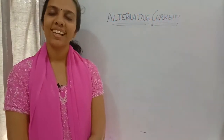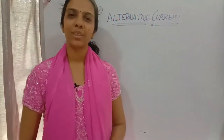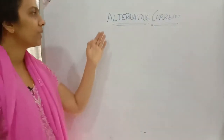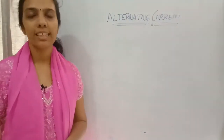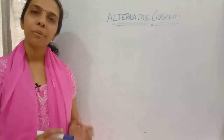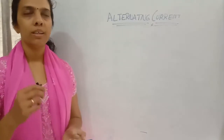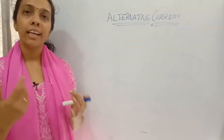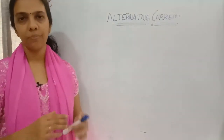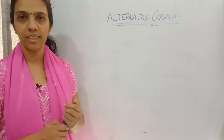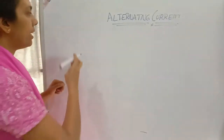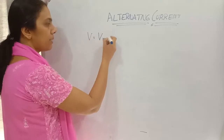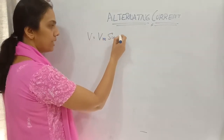Hello, my dear students, welcome back to Learn Physics. In today's topic we are going to continue with our alternating current chapter. In the previous classes we learned about AC circuits including resistance, inductor, and capacitor separately. We learned that if we are using a voltage v equals vm sine omega t...